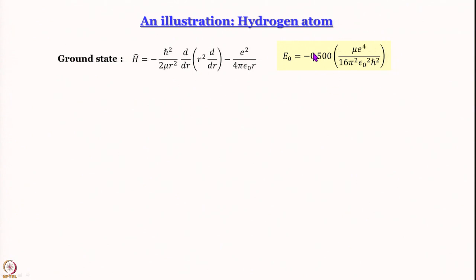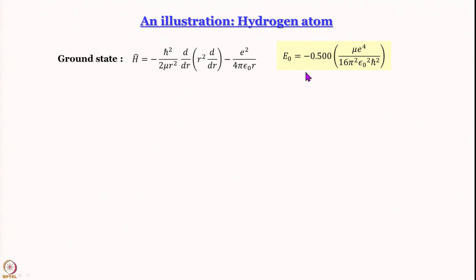I know the ground state energy. The good thing is I should be able to use the variation method and get something close. We are taking the upper limit theorem axiomatically for now and working it out. You have to sit in front of the computer with pen and paper and work it out yourself — I will not do extensive integration. We will see whether the minimum value of ε₀ that we get is greater than E₀ and by how much.